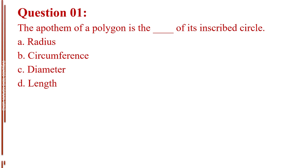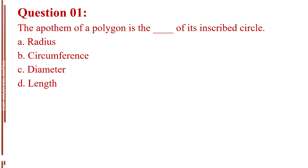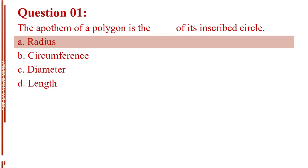Question number 1. The apothem of a polygon is the blank of its inscribed circle. Letter A, radius. Letter B, circumference. Letter C, diameter. Letter D, length. The answer is Letter A, radius.